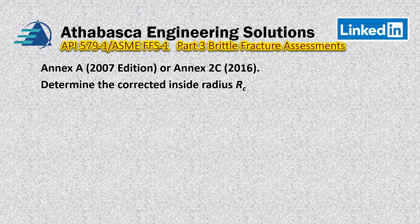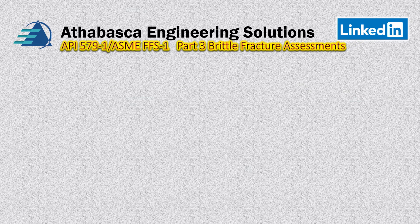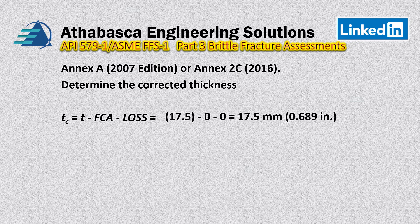First, we determine the inside radius using the equation: half the inside diameter plus the future corrosion allowance plus any losses. Doing the math, we get 1016 millimeters. We then work out the corrected thickness using the nominal thickness minus the future corrosion allowance minus any losses, and we end up with 17.5 millimeters.